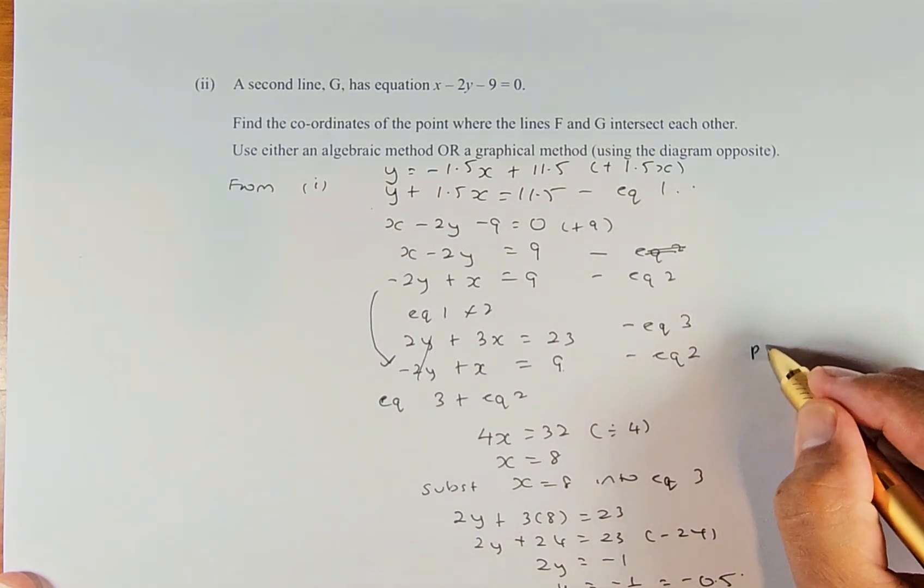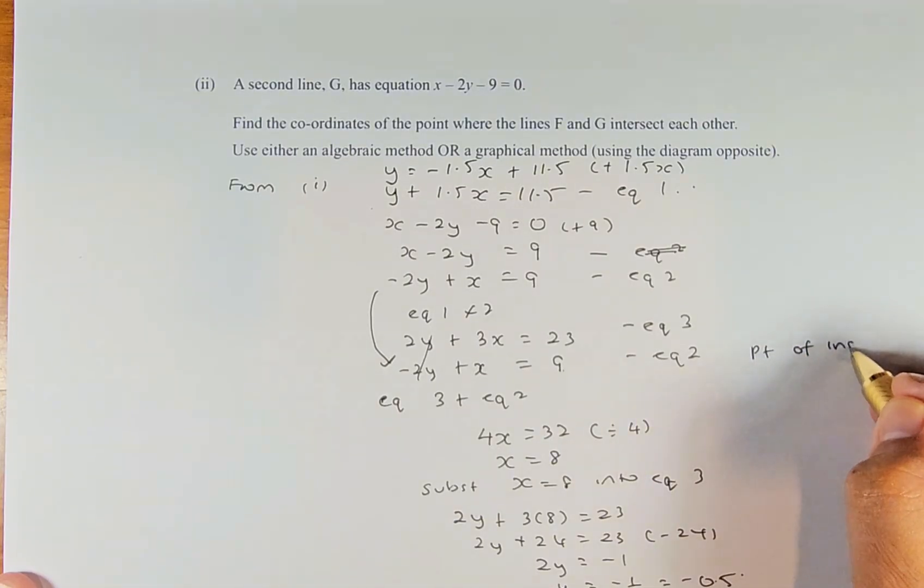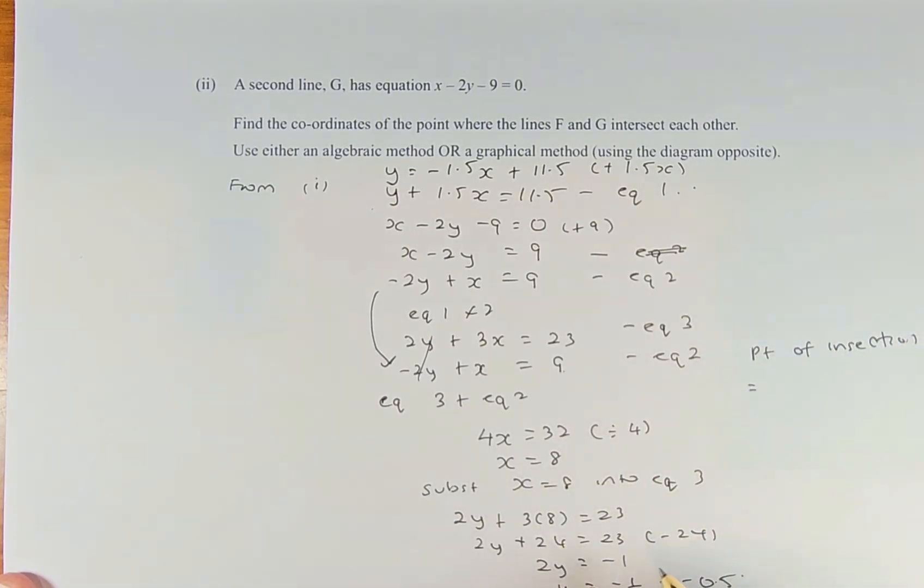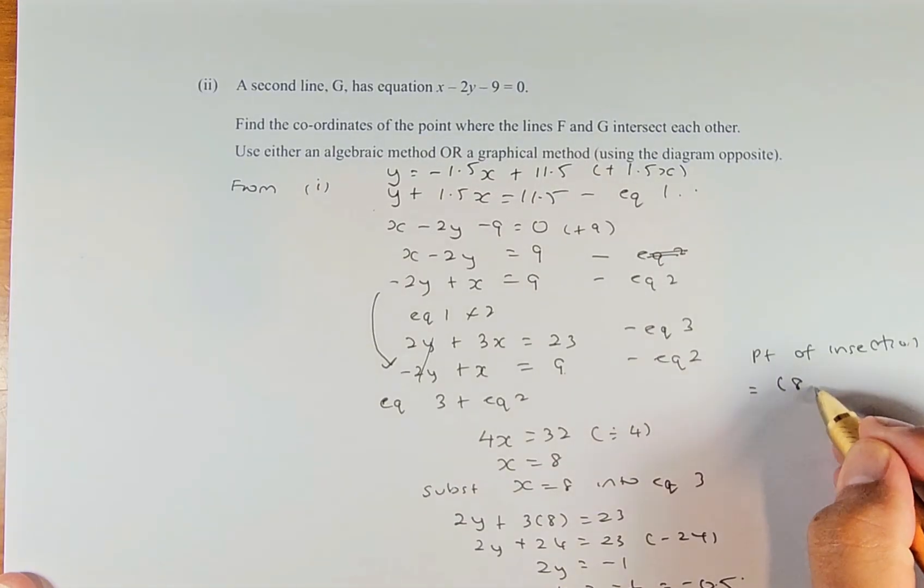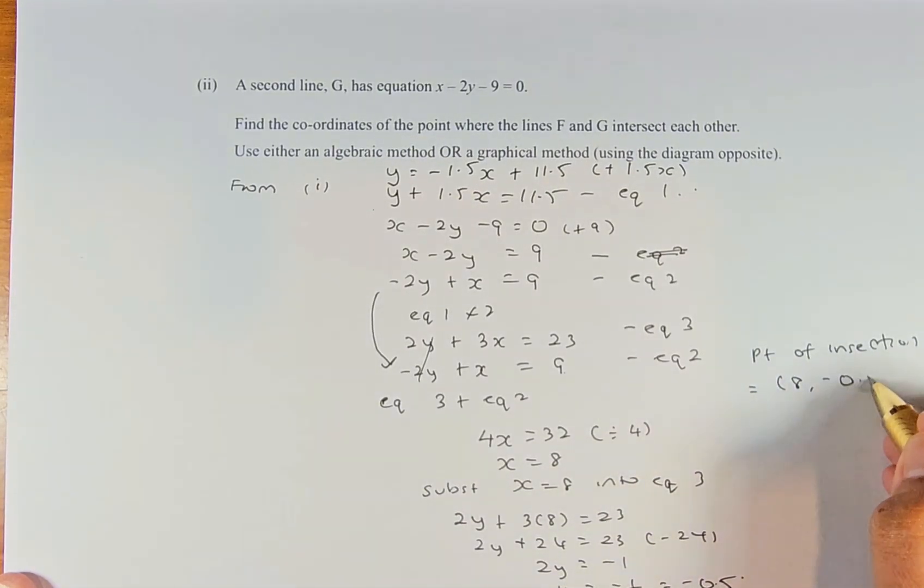The point of intersection between the two graphs is x = 8 and y = -0.5 or -1/2. That is the merit in this paper.